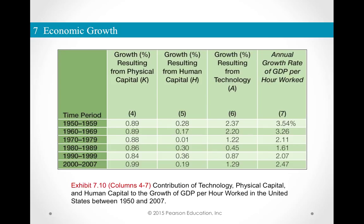Let's look at the data in another way — this is called growth accounting. This will allow us to answer the question of how important these three factors are in the total economic growth caused during this period. For example, in 1950 to 1959 the economic growth rate was 3.54 percent. What was the individual contribution of physical capital, human capital, and technology to this growth rate?